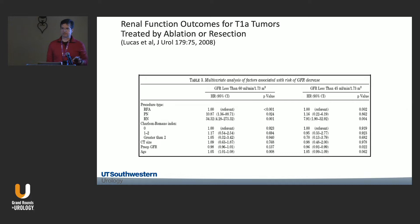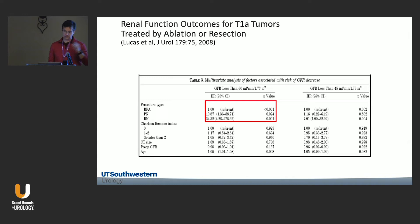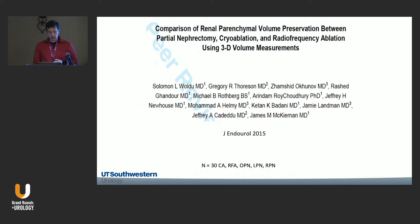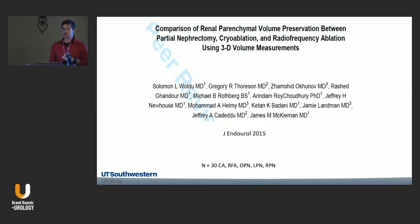Regarding renal functional outcomes, our group looked at this 13-14 years ago comparing partial nephrectomy versus radiofrequency ablation. The risk of a GFR insult — going from good function to CKD stage 3 — showed a significant advantage for ablation. Cryoablation and RF both preserve renal function better than partial nephrectomy, and I believe this is all related to the renorrhaphy and the loss of renal function during partial nephrectomy. With ablation, there is no renorrhaphy — we're just ablating tissue without compromising the rest of the kidney.